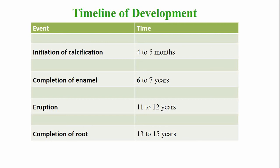The maxillary permanent canine: calcification begins at the age of four to five months, and the crown is completed by the age of six to seven years. The tooth emerges into the oral cavity by the age of 11 to 12 years, and root completion is around the age of 13 years.